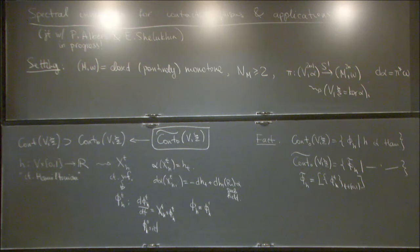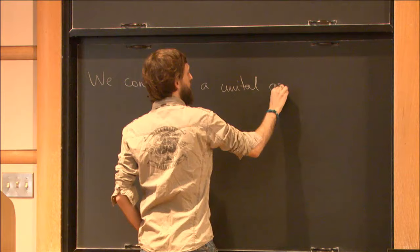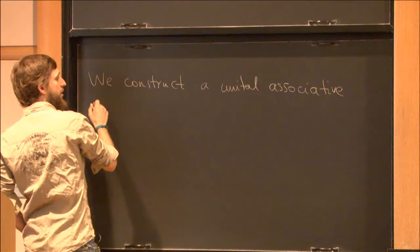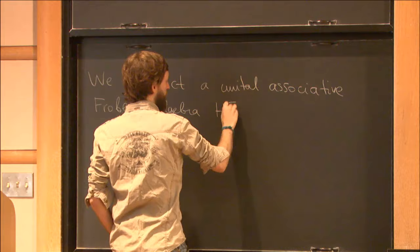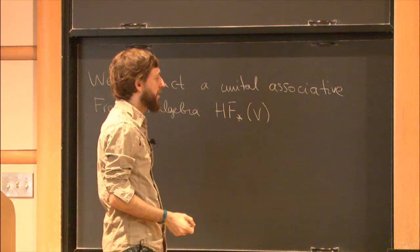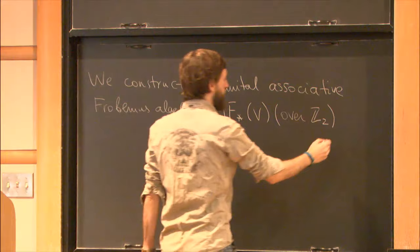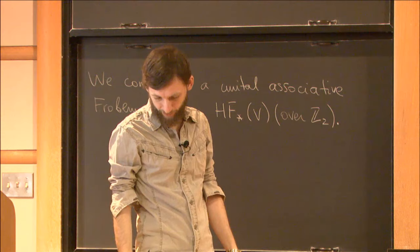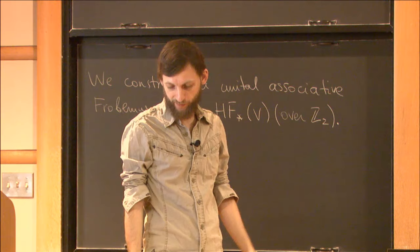What we do is construct some kind of invariant of this contact manifold, which is a Floer-type homology. We construct a unital associative Frobenius algebra, which we call the Floer homology of V, denoted FH(V,ξ), over Z₂ for now. Toward the end of the talk, I'll tell you what it is and how to construct it precisely.